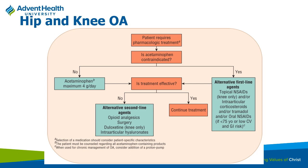Duloxetine is good for neuropathic pain and is one of the options available. A lot of patients end up on opioids because their pain is not adequately managed with other medications, but we like to hold off as best we can. When you move from acute to chronic pain management, a whole host of issues arise—so these are important things to consider.